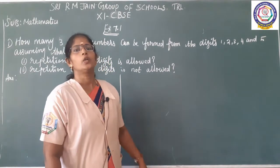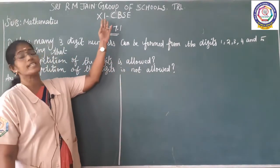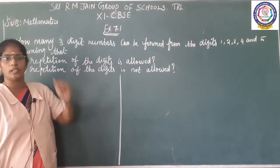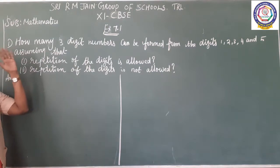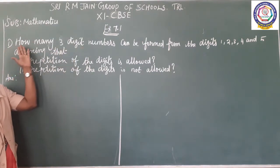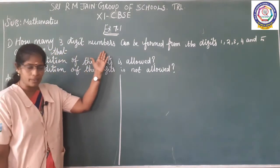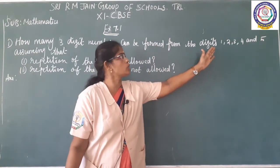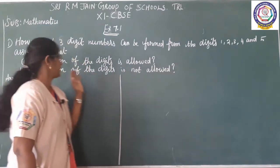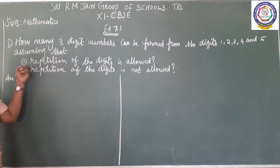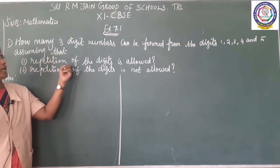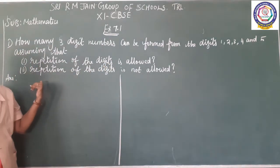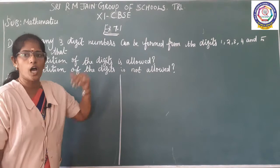Shri Gurubhyo Namaha, students. Today we are going to see about Class 11 standard CBSE Math Exercise 7.1. The first question: How many 3-digit numbers can be formed from the digits 1, 2, 3, 4 and 5? Assuming that first subdivision: repetition of the digit is allowed. Second subdivision: repetition of the digit is not allowed.